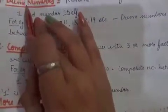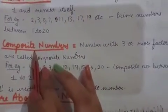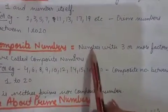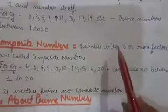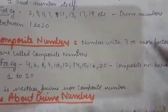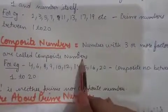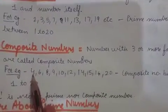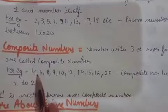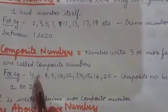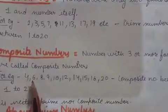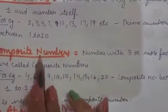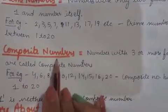Now, the numbers that are not prime numbers are called composite numbers. Composite numbers have 3 or more factors. For example, 4 comes in the table of 1, 2, and 4 itself, so it has 3 factors. Six comes in tables of 1, 2, 3, and 6, so it has 4 factors. These are composite numbers.